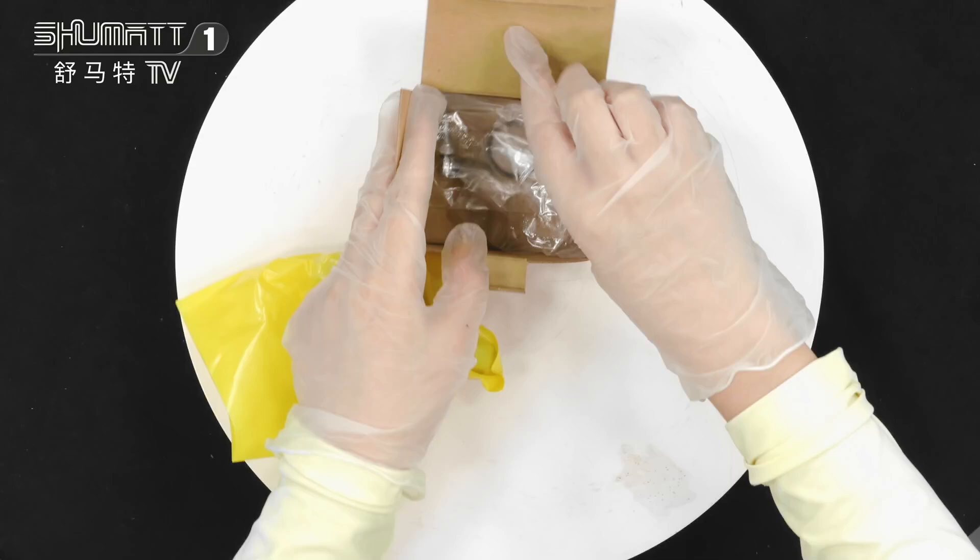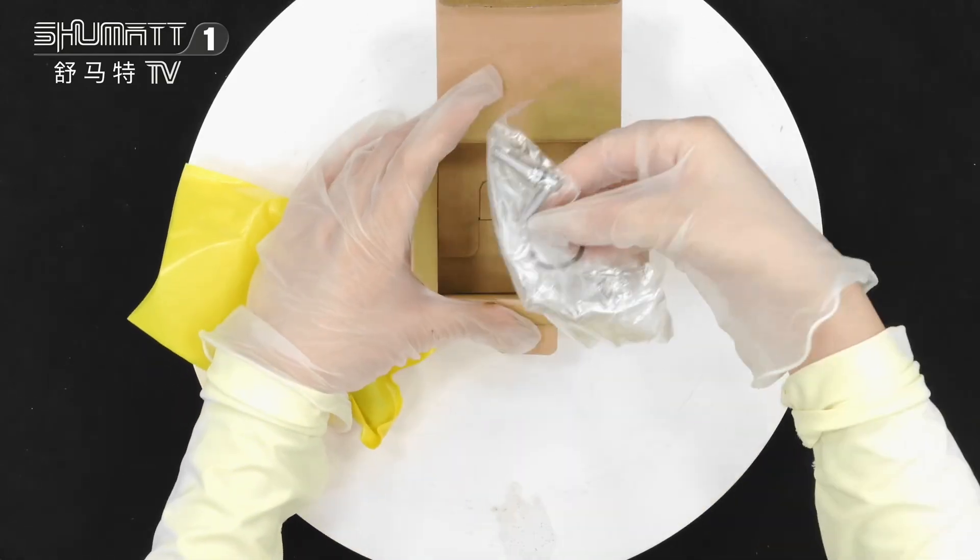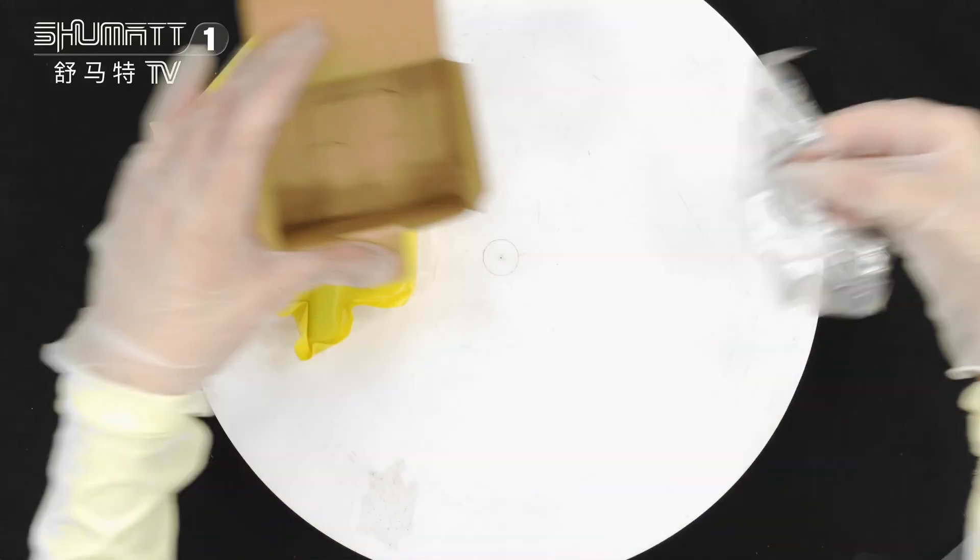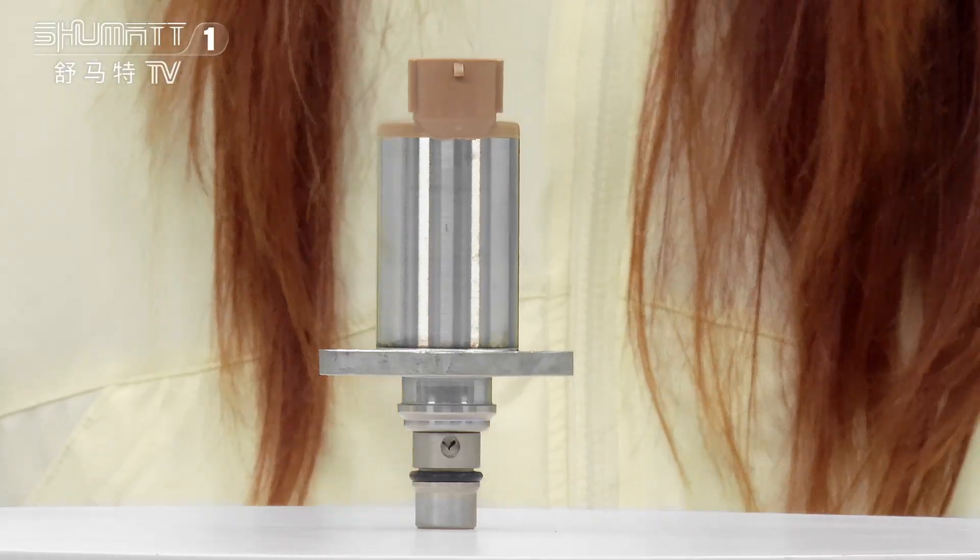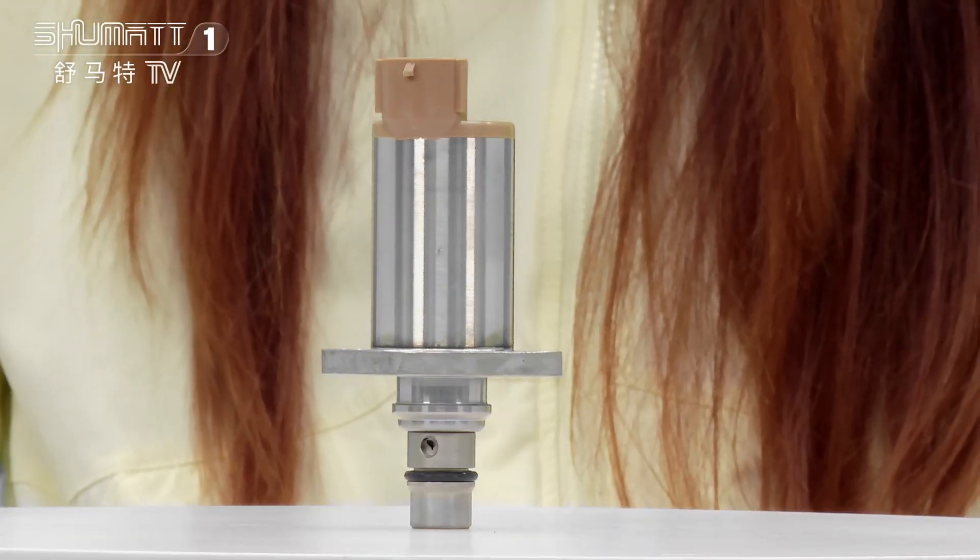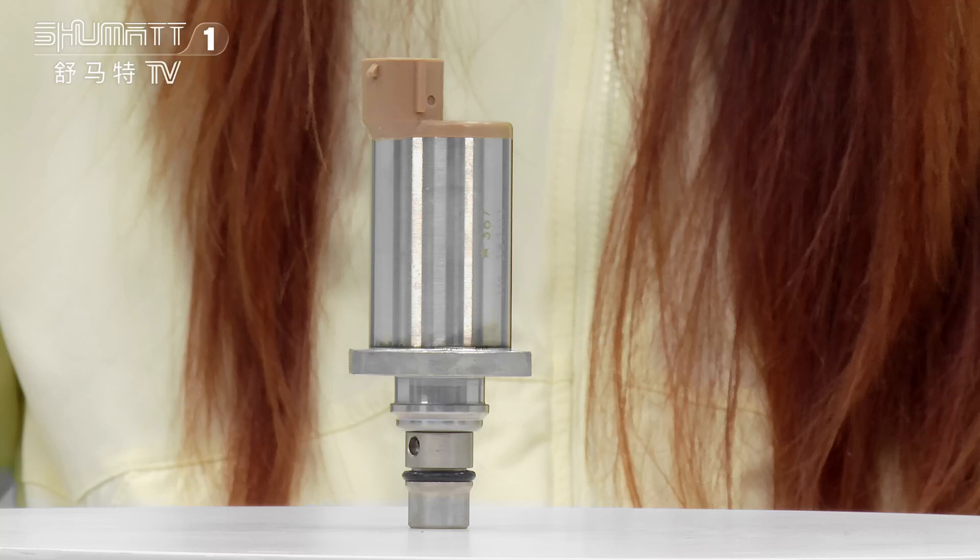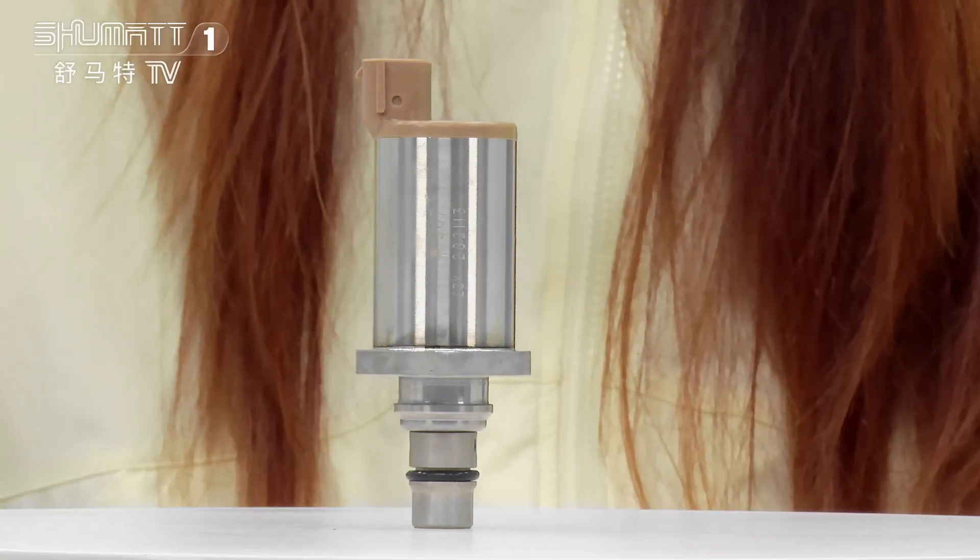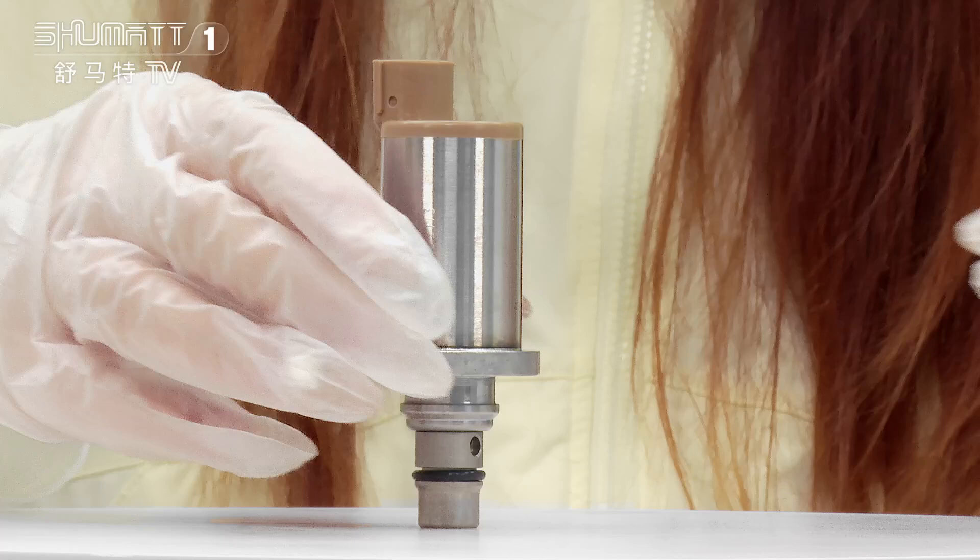And those are accessories here - the o-ring and the screw. Okay, this SCV valve, the part number is 294200036670. Palm SCV valve, China manufactured, with warranty support.